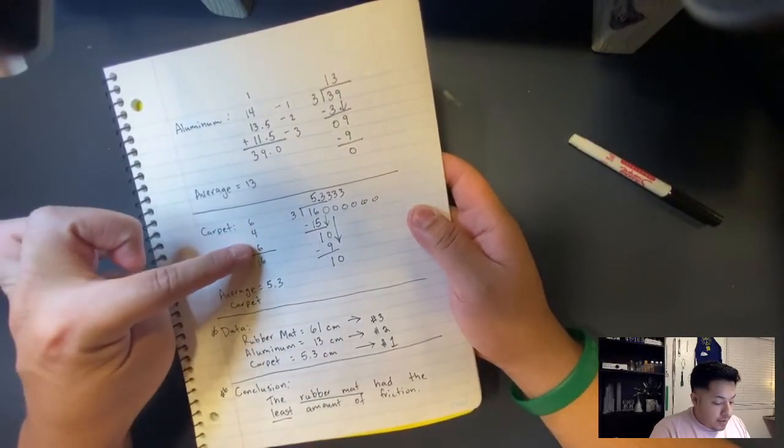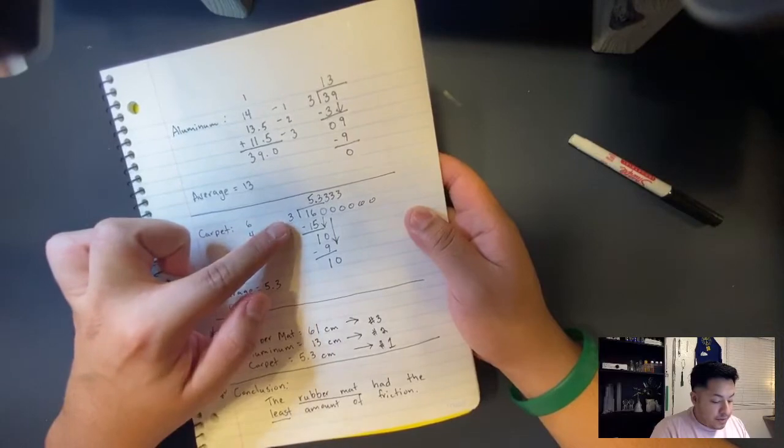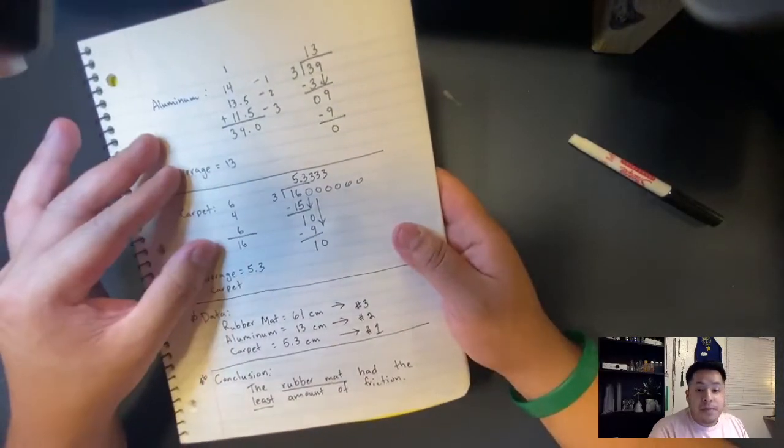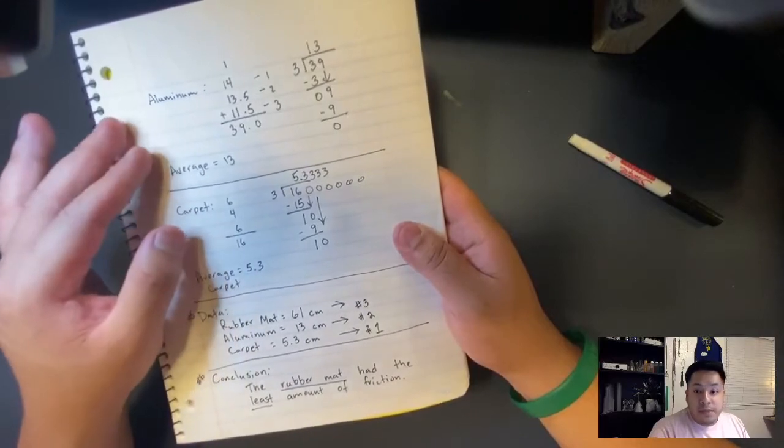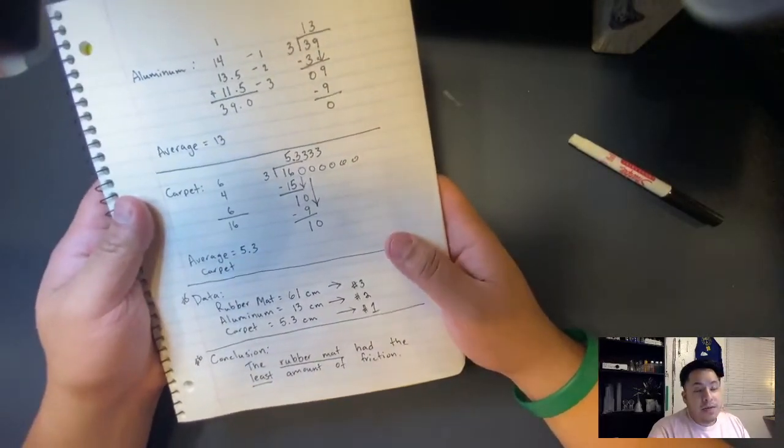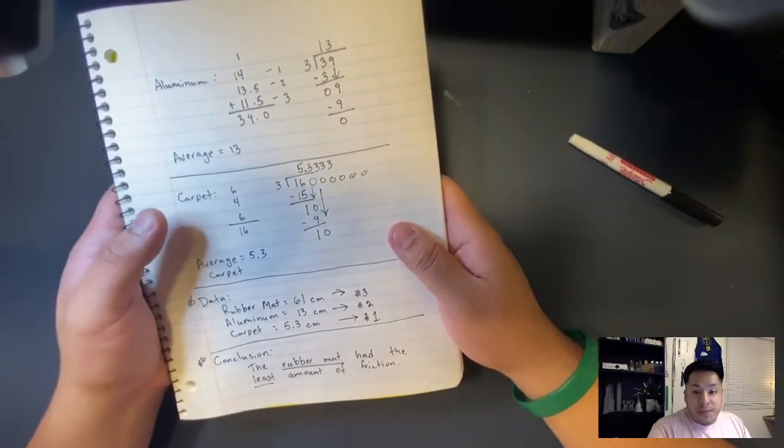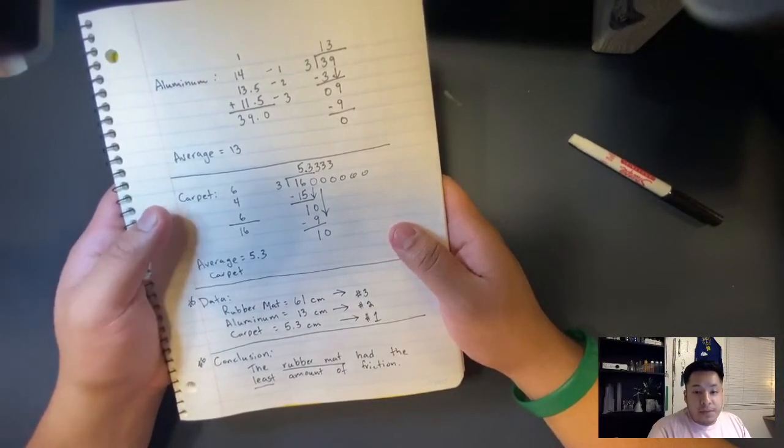Again, I added the three numbers, divided by three, and got the average. If you need some help doing that, watch the extended version, okay? I recommend watching the extended version, but I know it's kind of long. Not all the videos will be that long, but I'll try to make them a little bit shorter next time.